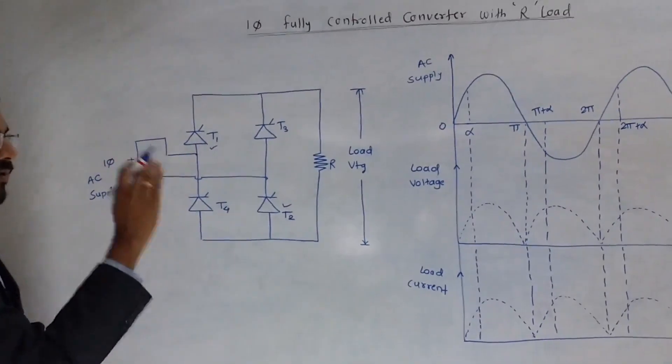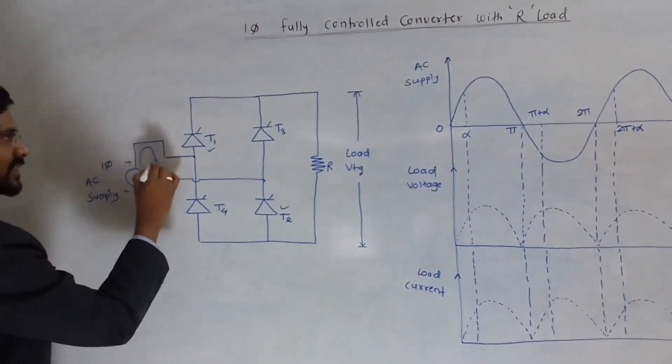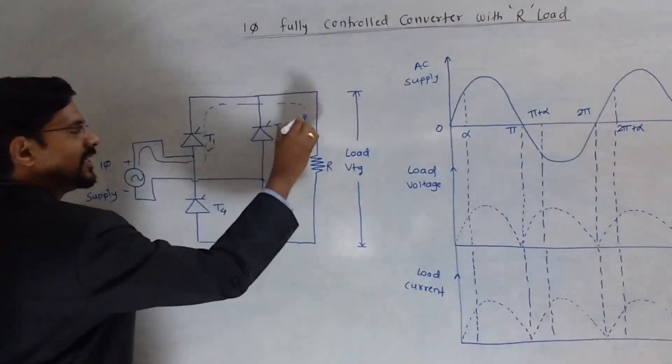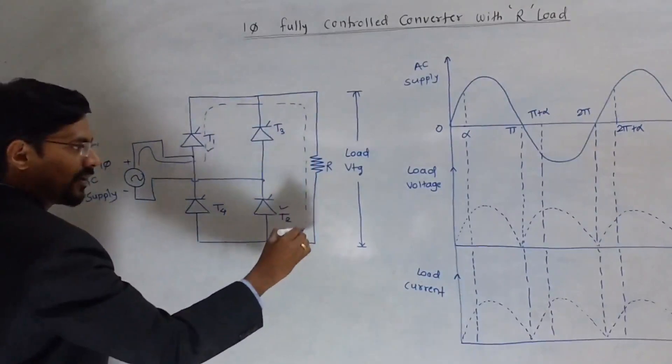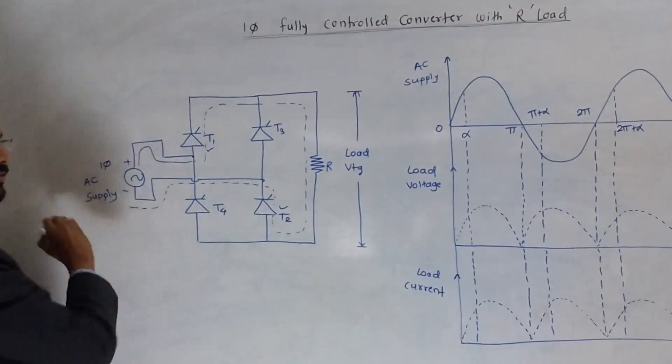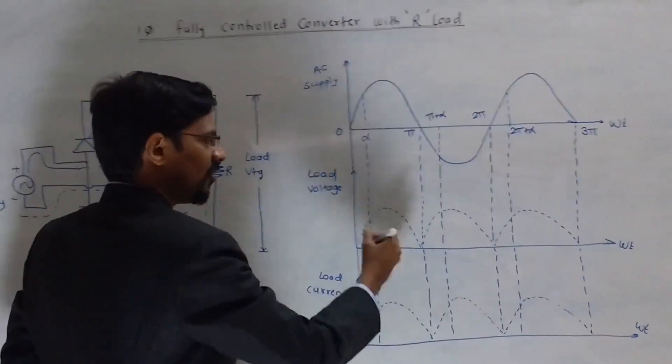Therefore, for positive half cycle, current will flow from this plus, then T1, then this load R and then T2 and again back to this negative. So you will get a waveform similar to the supply waveform.